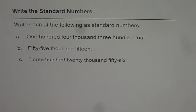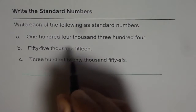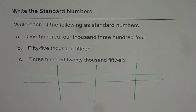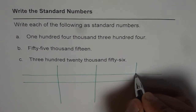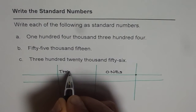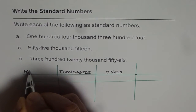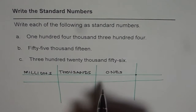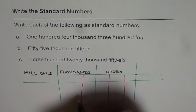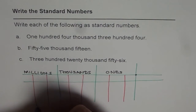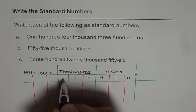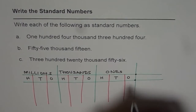To write numbers in standard form we should make a place value chart. In a place value chart, starting from the decimal point, on the left side we have ones, thousands, and millions. In each group we have ones, tens, and hundreds — so we divide them into three groups. The rightmost position is the decimal point.